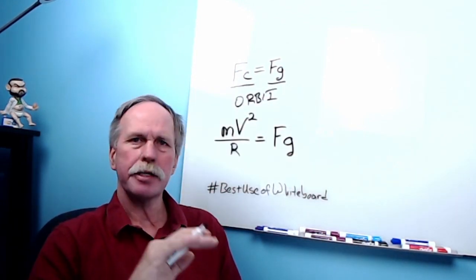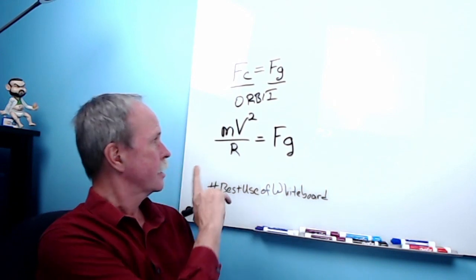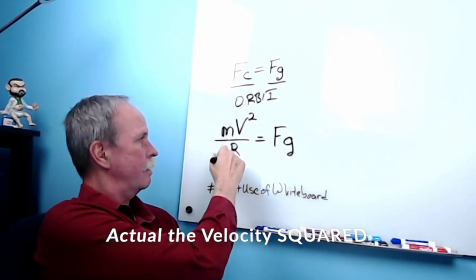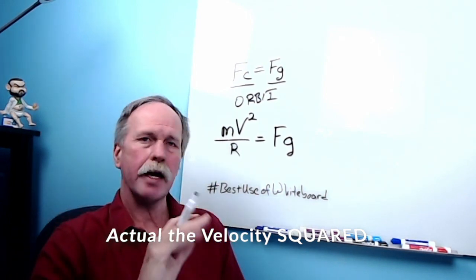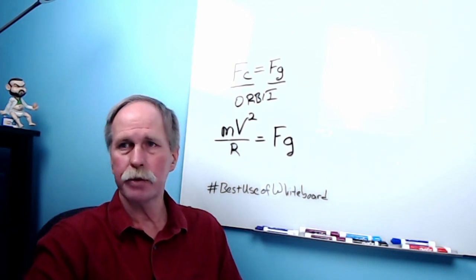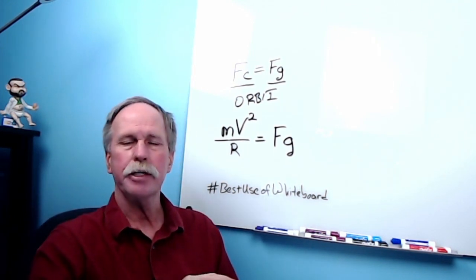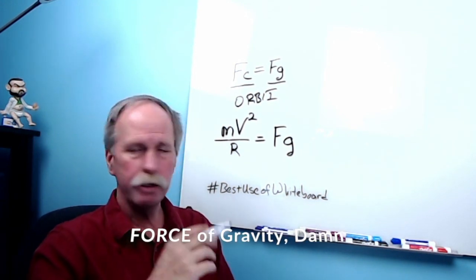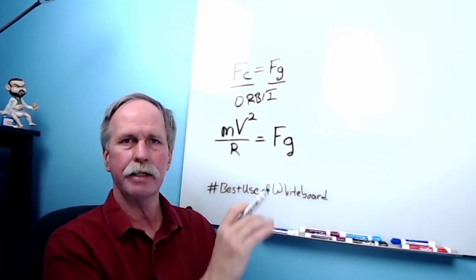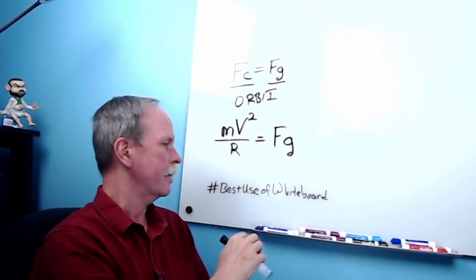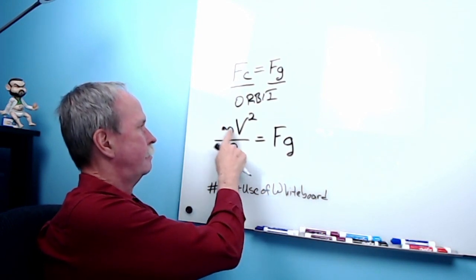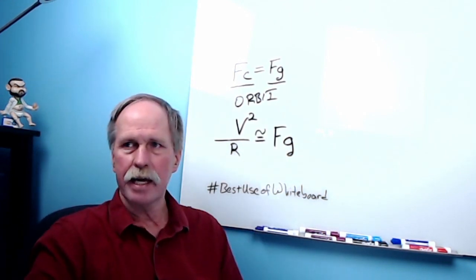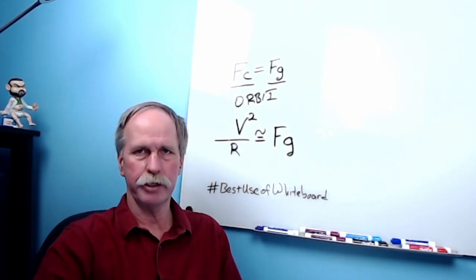An easy way to look at this is to look at what centrifugal force is. Centrifugal force is equal to the mass of the object times the velocity of the object over the radius. For an object to be in orbit, that has to equal the force of gravity. The mass of the object also appears in the formula for gravitational force, and they cancel each other out. So when you look at orbits, the mass of the satellite doesn't really come into play.